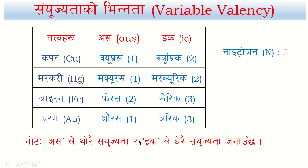Nitrogen has valency 3 and 5 — normally it is 3. Sulfur has valency 2, 4, or 6 — normally it is 2. Sometimes sulfur is 4, as in sulfur dioxide (SO2), where sulfur valency is 4. Hydrogen sulfide has sulfur valency 2. Sulfur trioxide (SO3) has sulfur valency 6.